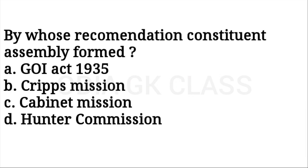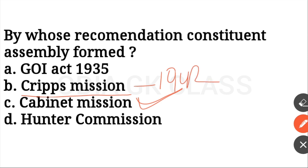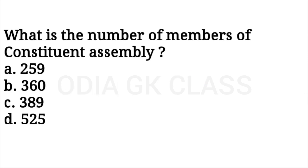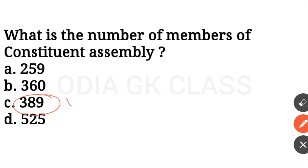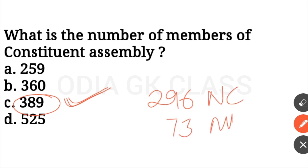Next question: by which recommendation was the Constituent Assembly formed? The total number of members in the Constituent Assembly was 389 members at the first meeting.